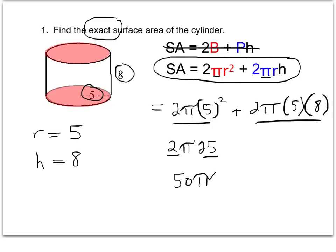The second term: multiply each of the numbers. 2 times 5 times 8 - 2 times 5 is 10, and 10 times 8 is 80. So that second term simplifies to 80π.